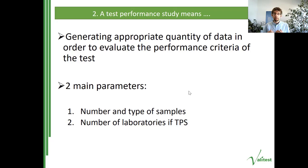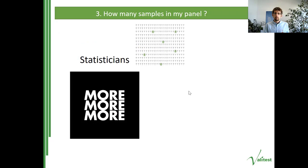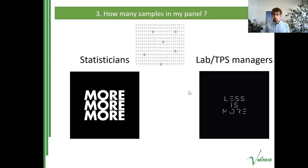You are between two contradictory forces. Statisticians would always suggest adding more samples and more laboratories — the more you have, the higher the chance of being close to a representative panel of the full population. On the other hand, as a laboratory or TPS organizer, you cannot use too many samples or include too many laboratories due to limited resources. So you need a balance between statistical relevance and representativity of your subset compared to available resources.